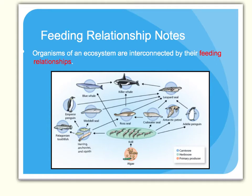Organisms in an ecosystem are connected by their feeding relationships. We can observe this by looking at a food web, like in the image here, which shows the transfer of energy from one organism to another. For example, a seal transfers its energy to a leopard seal, which provides energy to a killer whale, based on feeding relationships. The arrows show the direction of energy flow. In this food web, we have primary producers, herbivores, and carnivores — one producer, one herbivore, and a number of carnivores.